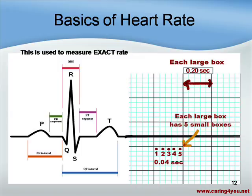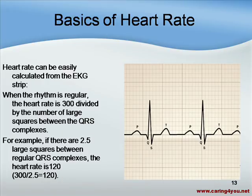There are two ways to find the rate on an EKG strip for the purpose of the NCLEX. If the heart rate is regular, we can use the 300 method. If the heart rate is irregular, we can use the 6-second method.